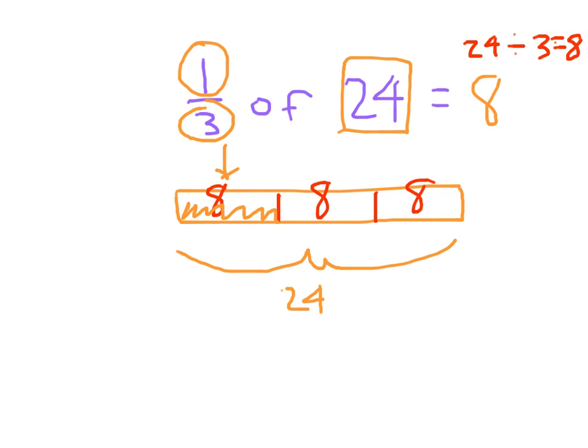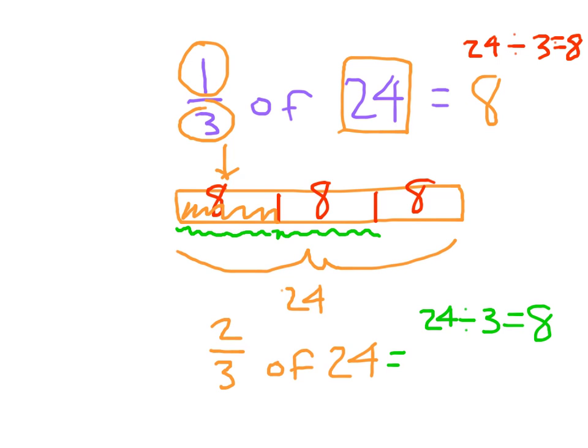Now the step forward from here is if we were to look at 2 thirds of 24, we would have to figure out that 8 number first. And then we'd have to look at 1 third of it, and then also another third of it. So 2 thirds of it. 2 thirds of 24, we would take 24 divided by 3 first to get that 8. And then we would look at 2 of those parts. 8 times 2, which equals 16. 8 and 8 together is 16. 2 thirds of 24 is 16.